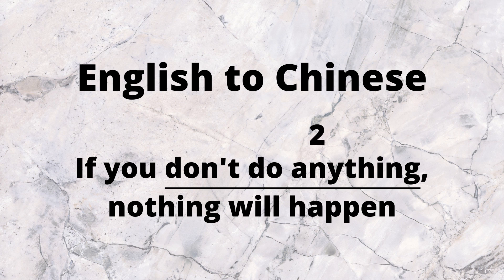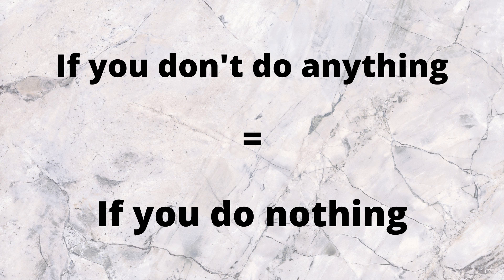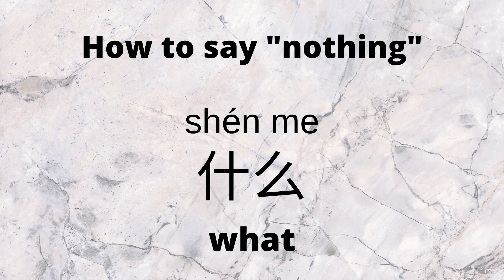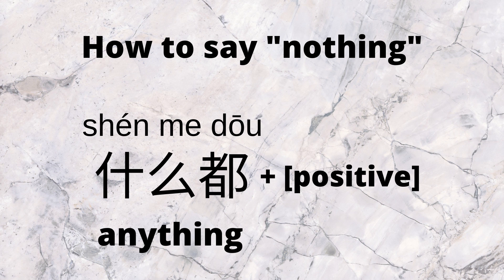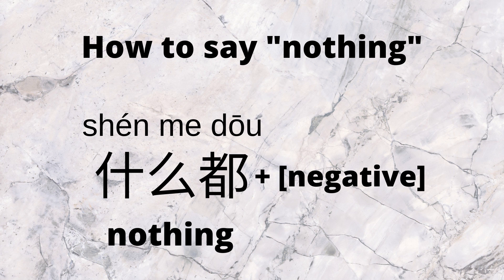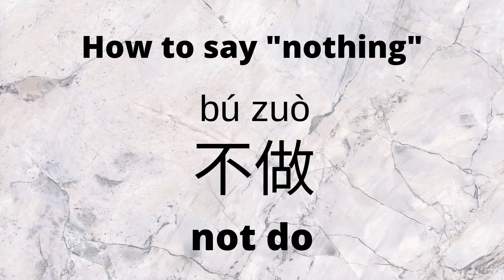Next is the second part: 'don't do anything'. The thing to realize is that to not do anything is to do nothing, so 'if you don't do anything' is the same as 'if you do nothing'. To say 'nothing', we first take the question word 什么, which means 'what', and we add the word 都 at the end. After 什么都, if we say something positive, then 什么都 means 'anything'. But if we say something negative, then 什么都 means 'nothing'. For the verb 'to do', we can use 做, and to make it negative, we put 不 in front of it.